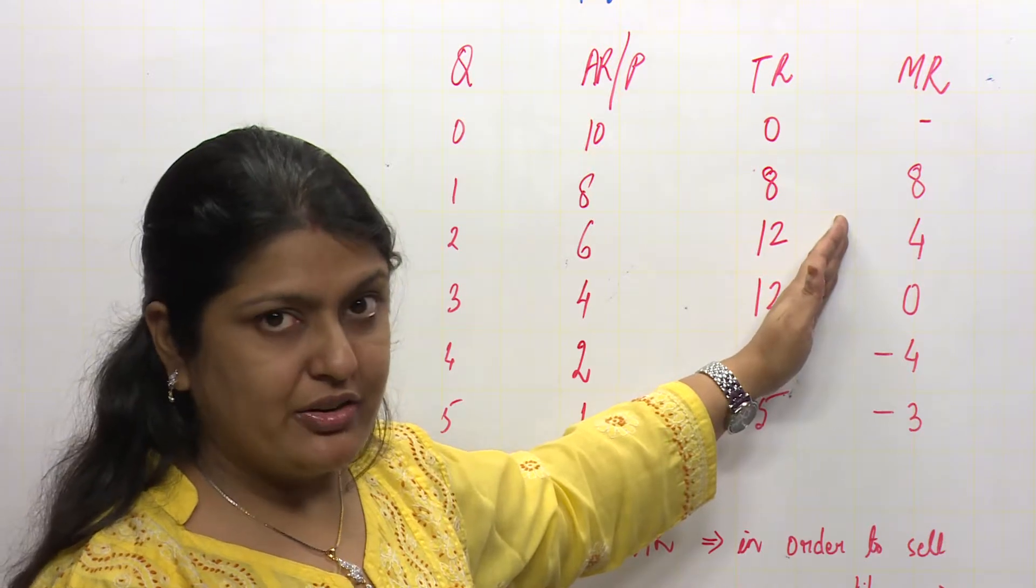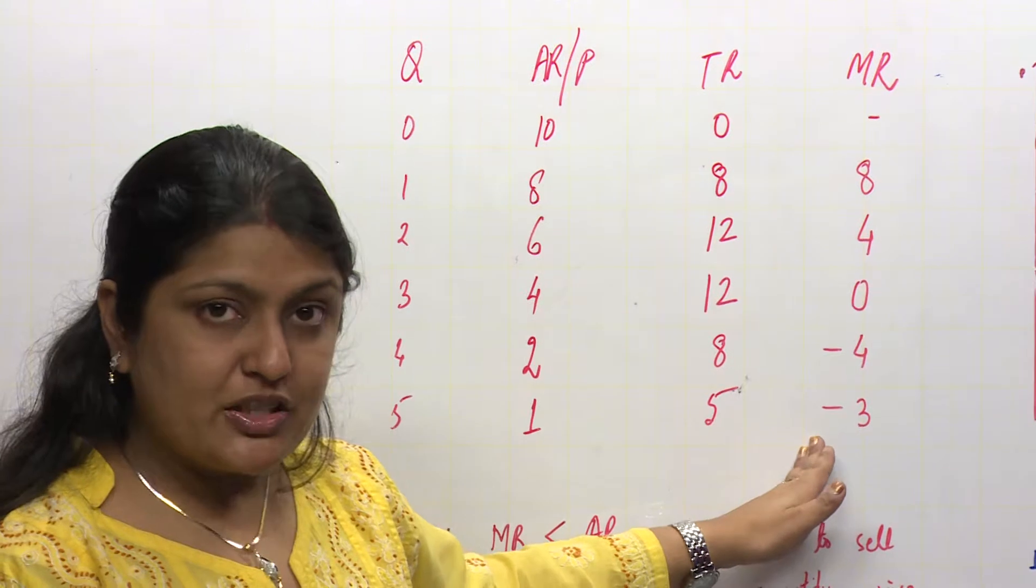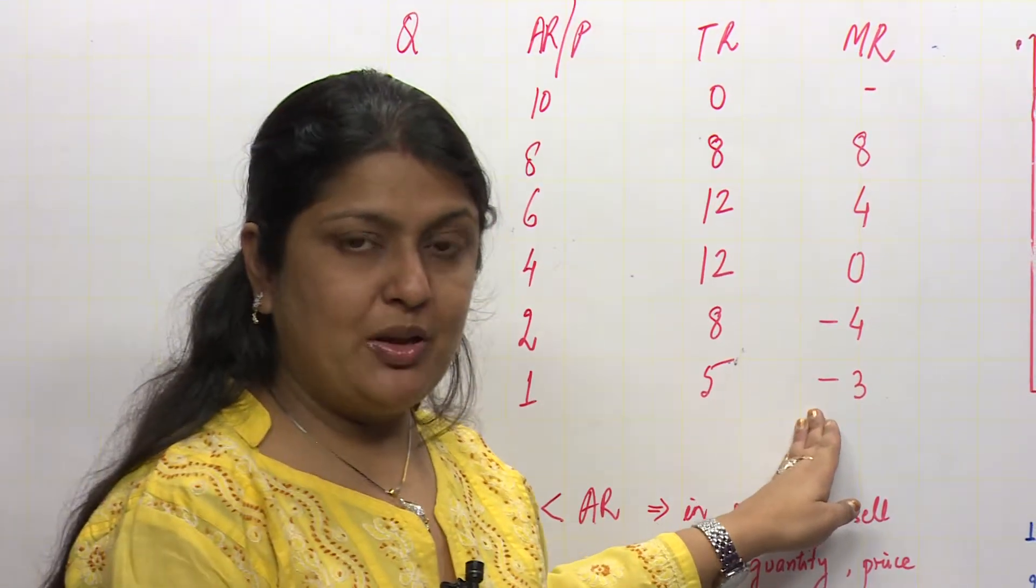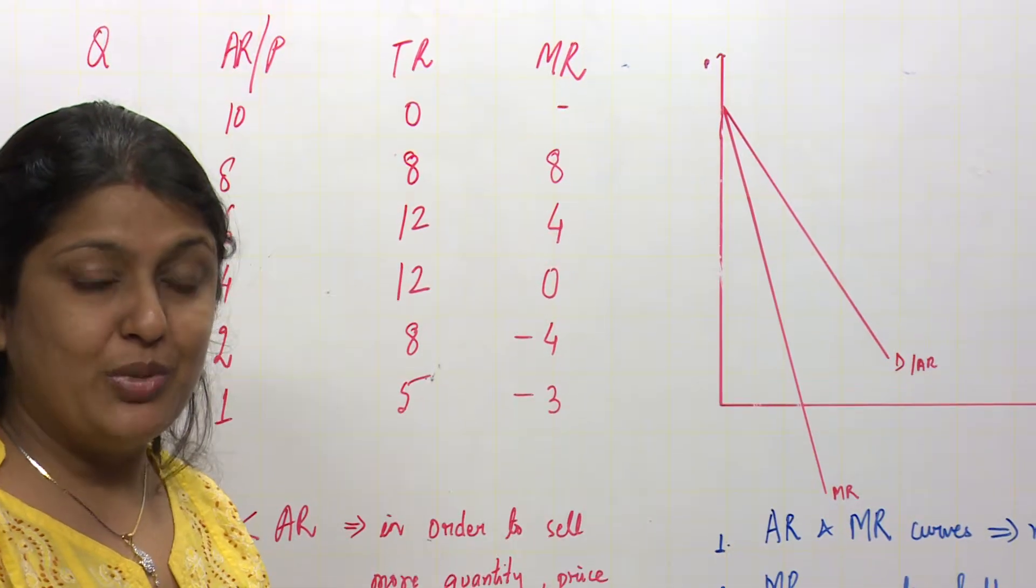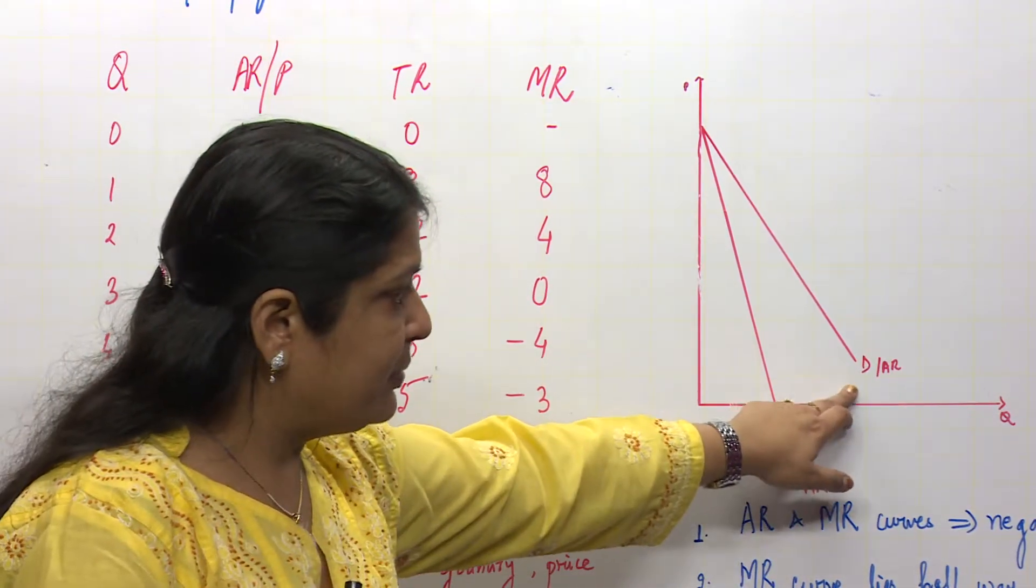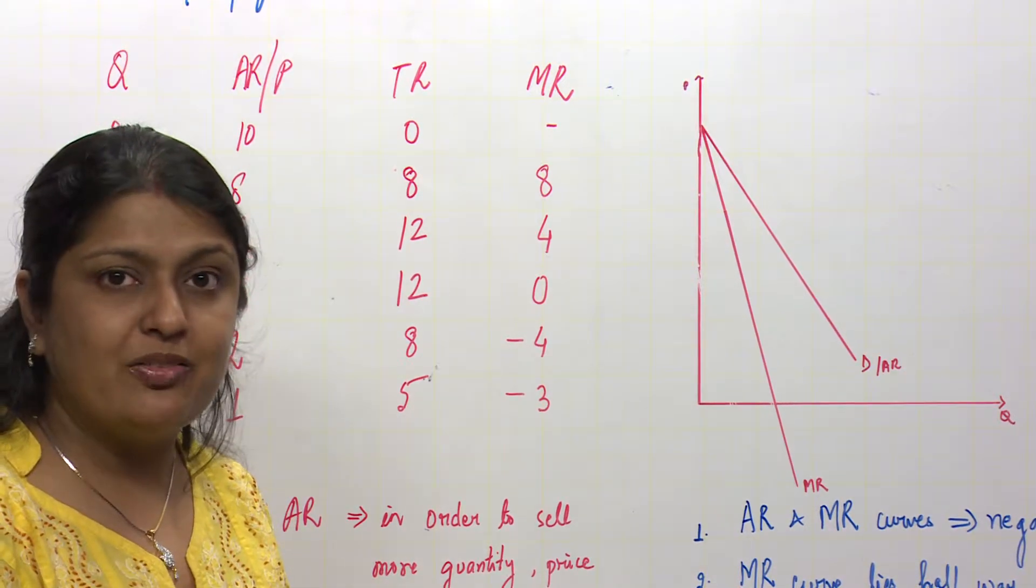which shows first a falling trend to zero and then negative trend. This means in case of a monopoly market, average revenue is downward sloping, but the average revenue curve never touches the x-axis, which means average revenue will never be zero.